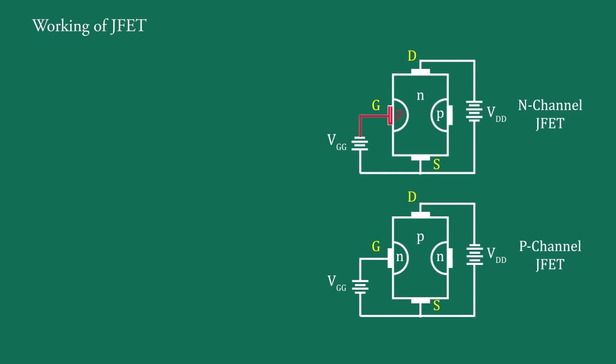Here, gate is connected with negative terminal of the battery. It means gate is reverse biased with respect to source. In this connection, gate is connected with positive terminal of the battery. Hence, gate is reverse biased with respect to source.